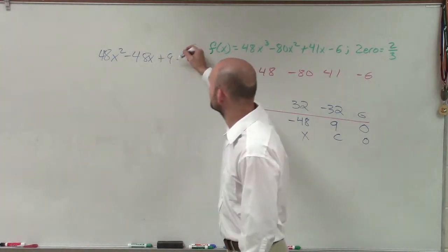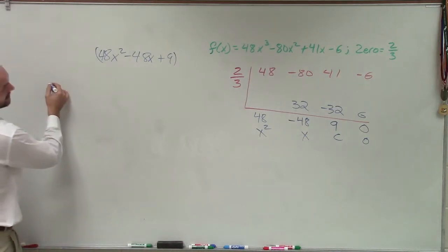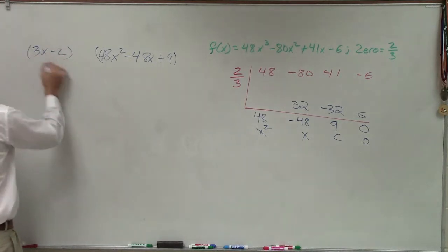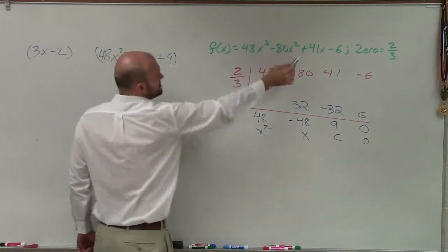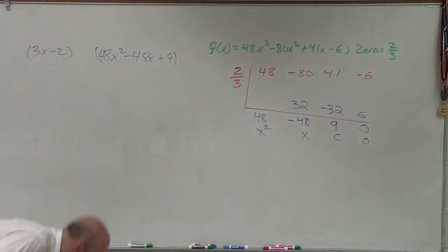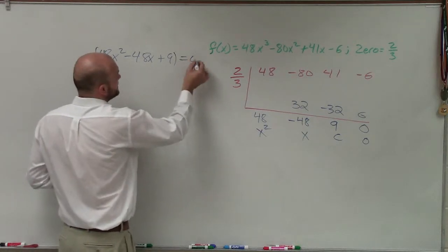And what I need to do is I need to factor this to find the remaining factors. Because this times my other factor, which would be 3x minus 2, this times this equals that, right? So what I need to do is I need to set this equal to 0 and find the remaining zeros.